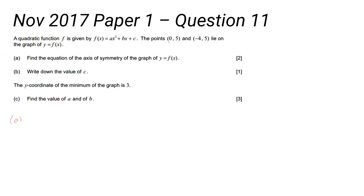Now it is no coincidence at all that these two points both have a y value of 5. So if I was to draw a sketch of this graph, the graph goes through (0,5) here and (-4,5) here.